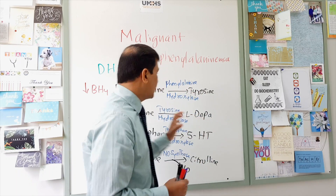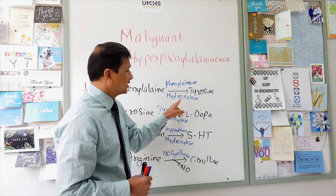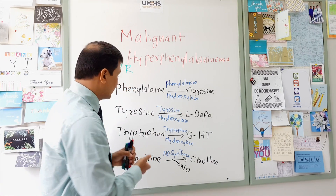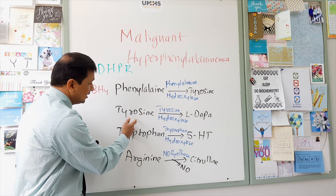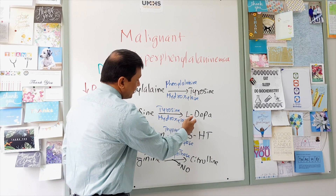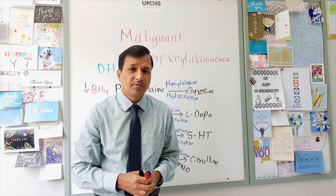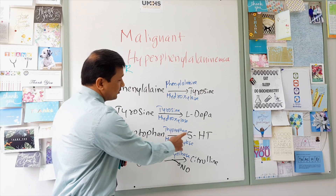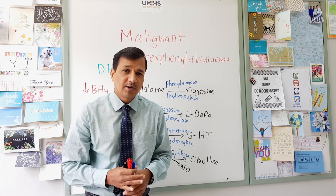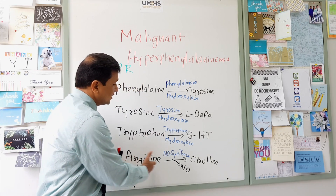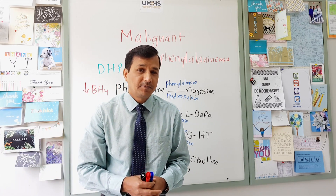On top of that, tetrahydrobiopterin is not only needed by phenylalanine hydroxylase — it is also required by other enzymes in other metabolic pathways. As shown here, tyrosine hydroxylase needs BH4 for the conversion of tyrosine into L-DOPA. Tryptophan hydroxylase needs BH4 for the conversion of tryptophan into 5-hydroxytryptophan. Nitric oxide synthase also needs BH4 for the conversion of arginine into citrulline and nitric oxide.